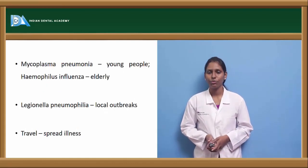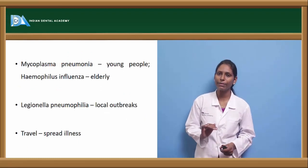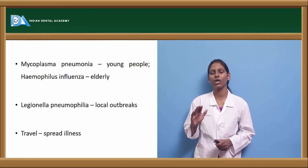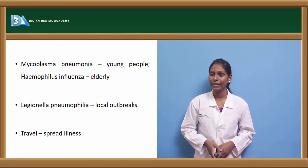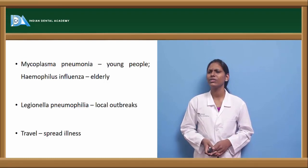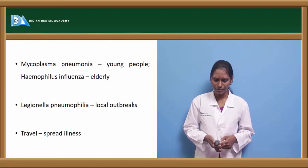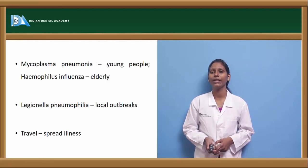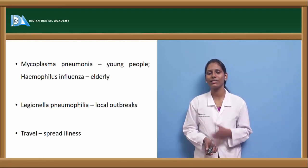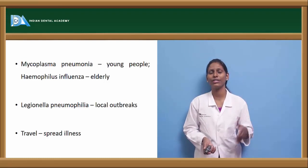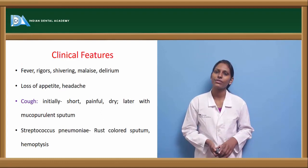Mycoplasma pneumonia is usually seen in young people. Haemophilus influenzae is commonly seen in the elderly age group. Legionella pneumophila is also seen, with local outbreaks reported. Travelers are a common route for spreading illness from one endemic region to another.